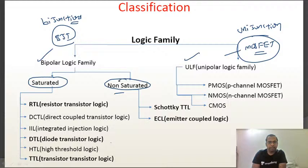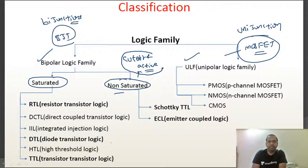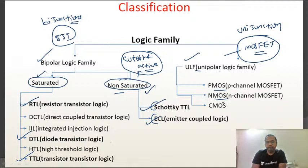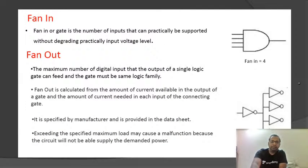In the bipolar logic family there are two types: saturated and non-saturated. Non-saturated means the transistor operates between the cutoff region and the active region — it never enters the saturation region, which is why switching times are very fast compared to saturated logic families. Schottky TTL and ECL come under non-saturated, while RTL, direct coupled transistor logic (I²L), DTL, HTL, and TTL are saturated. In the unipolar category we have PMOS, NMOS, and CMOS.